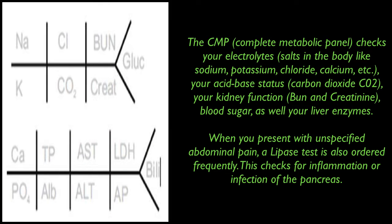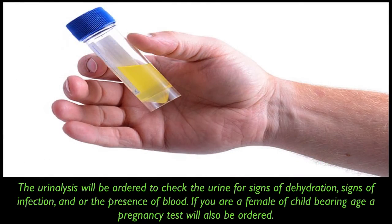The CMP, or complete metabolic panel, checks your electrolytes — salts in the body like sodium, potassium, chloride, calcium — your acid-base status via the carbon dioxide level, your kidney function via the BUN and creatinine, but also checks blood sugar as well as your liver enzymes. When you present with unspecified abdominal pain, we usually include a lipase test, which checks for inflammation or infection of the pancreas. The urinalysis will be ordered to check the urine for signs of dehydration, signs of infection, and the presence or absence of blood. If you are a female of childbearing age, a pregnancy test will also be ordered.